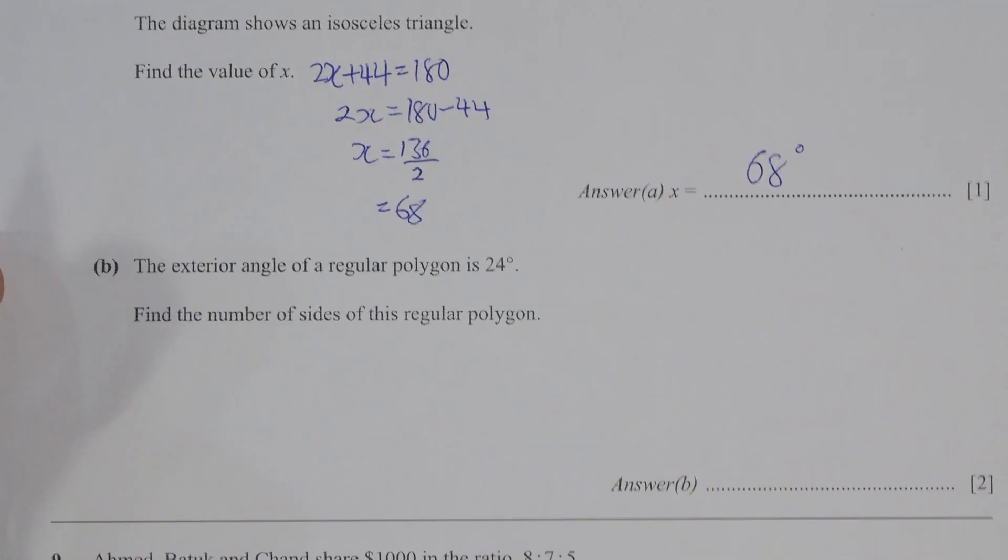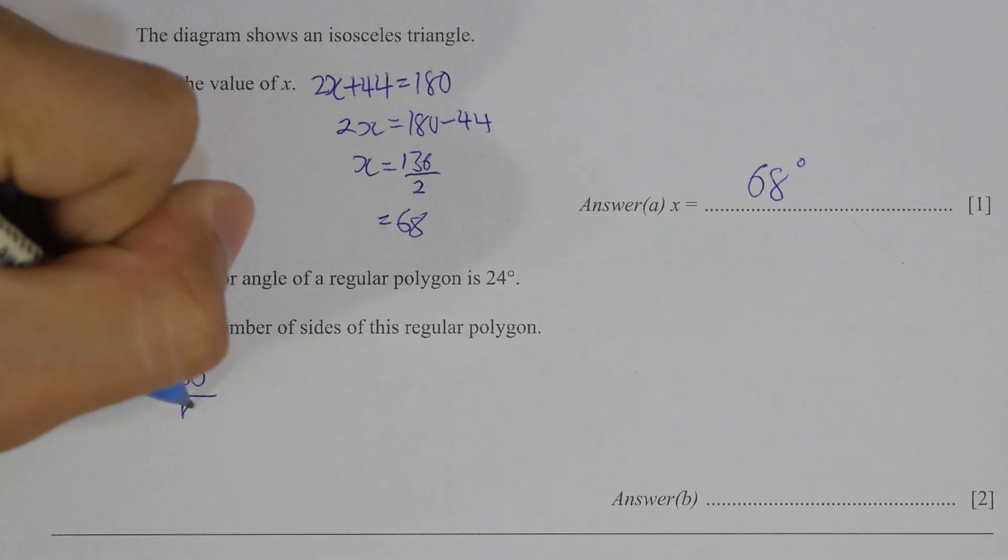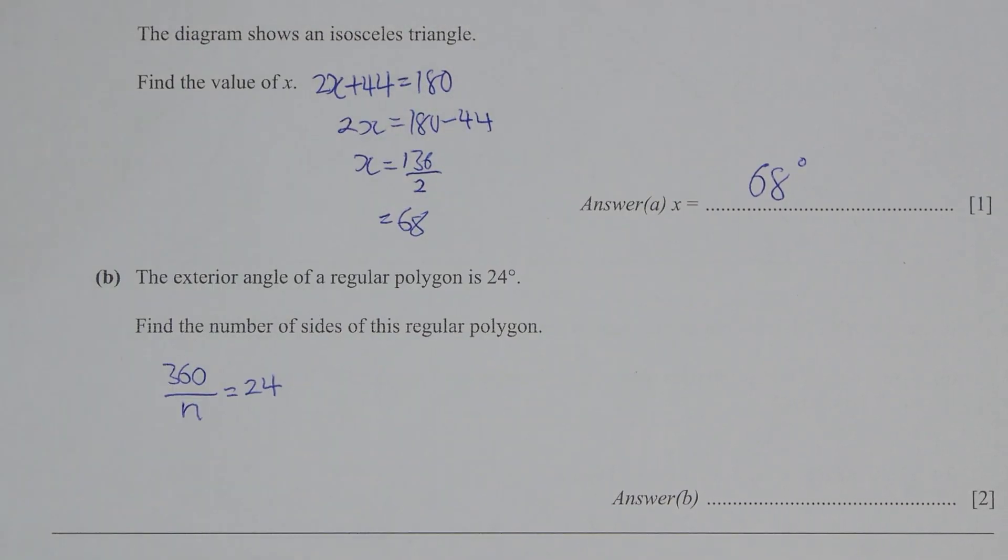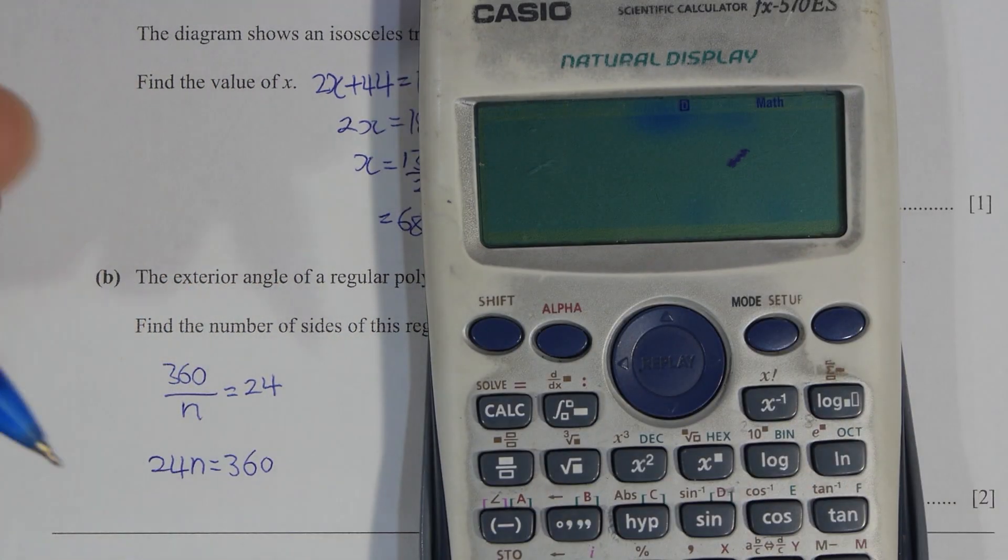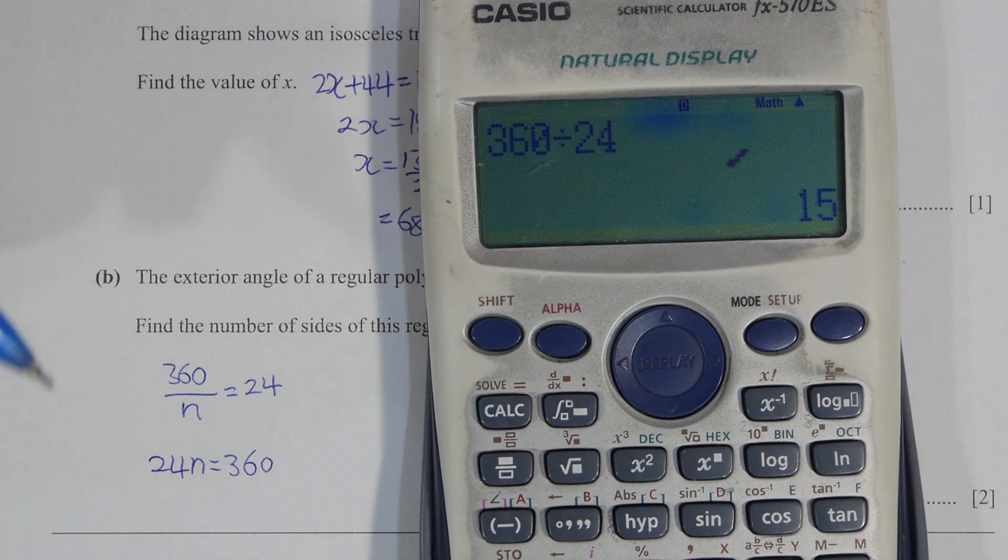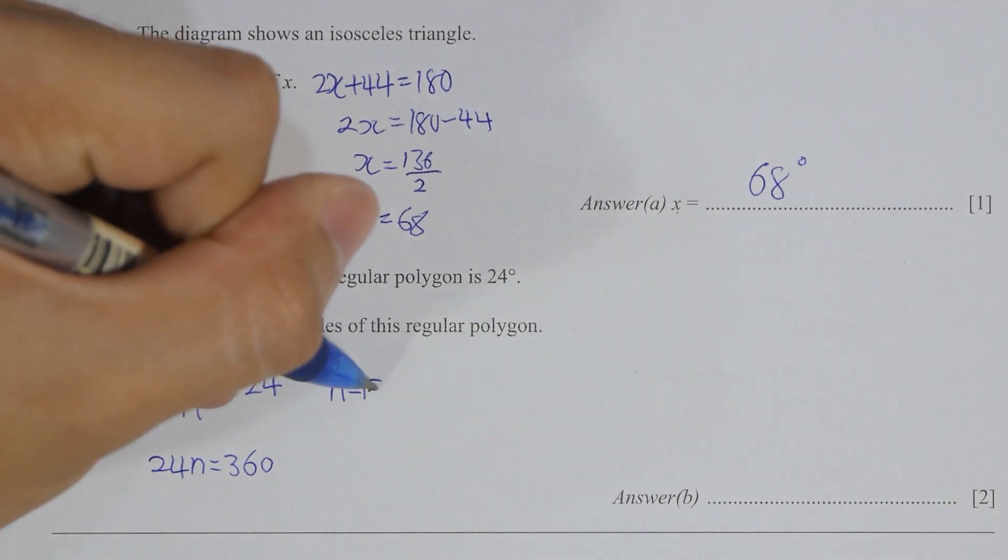For part B, for you to identify the side, simply use the exterior angle formula 360 divided by sides equals to 24 degree. So 24n equals to 360 and n equals to 15.